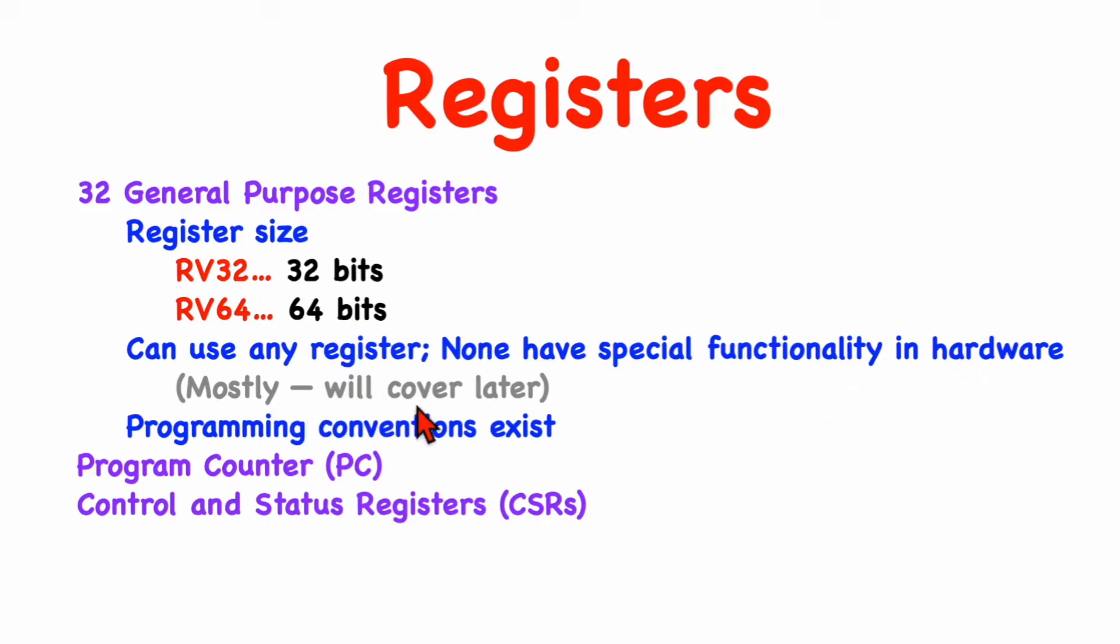With one exception that we'll talk about later. Now, of course, there are conventions that exist, and so programmers will use certain registers for certain things. There's also a PC, or program counter, that gives the address of the instructions that are being executed, and there are a number of control and status registers that are used to control the operation of the processor core.